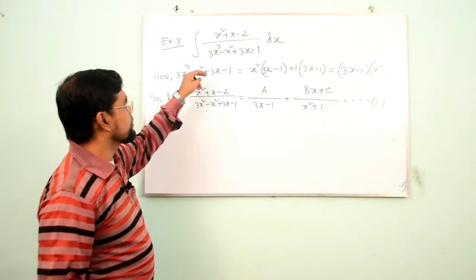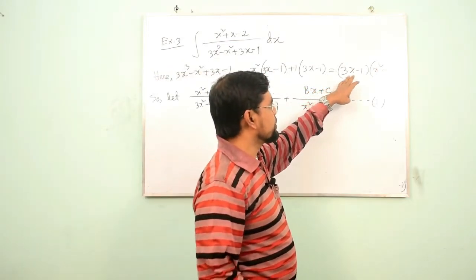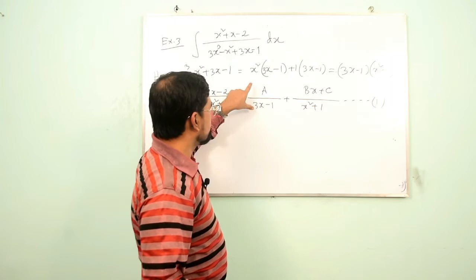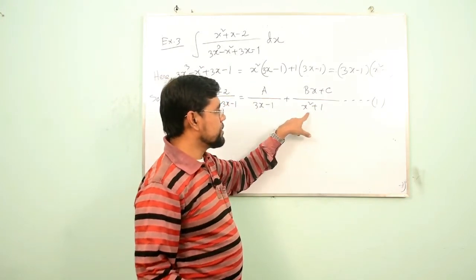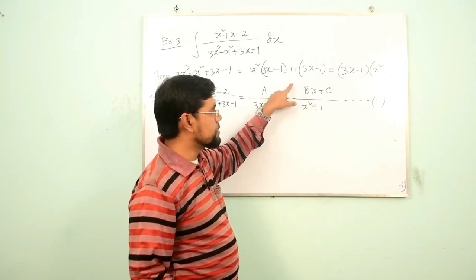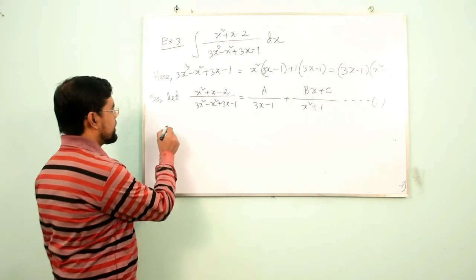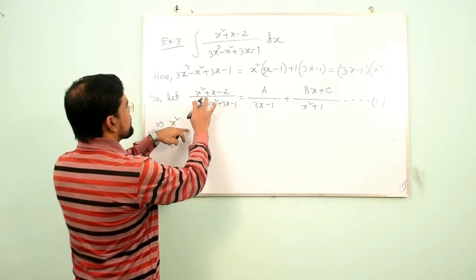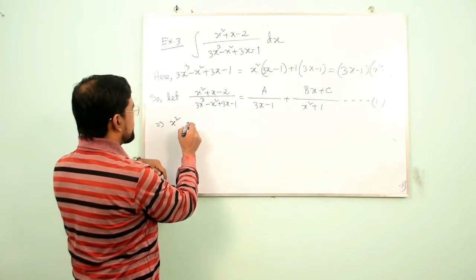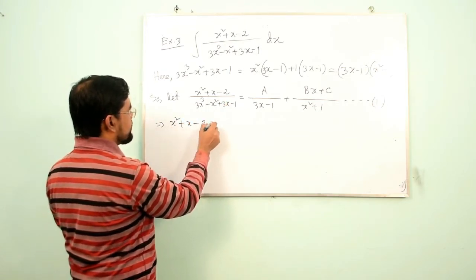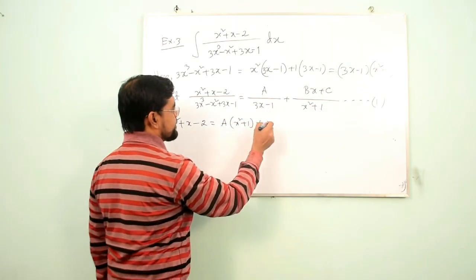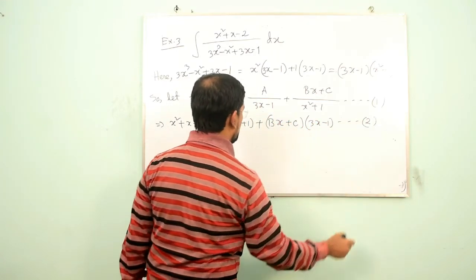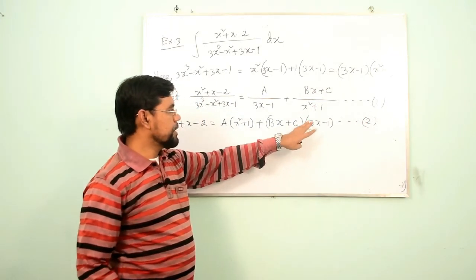Let us try another example. Here, factorizing the denominator gives two factors: one linear and one quadratic. The partial fraction decomposition will be A/(3x − 1) plus (Bx + C)/(x² + 1), since for the quadratic factor the numerator should be linear. Multiplying both sides by the denominator and putting x = 1/3 makes the first term vanish.